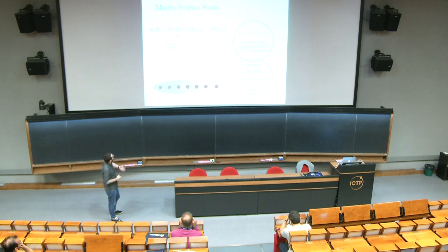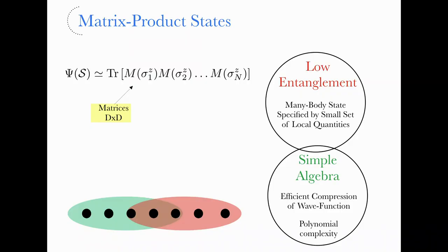Another philosophy that allows you to solve efficiently for a large class of quantum Hamiltonians is what has been discussed by Norbert Schuch in his lectures — matrix product states. The idea is that you can write an efficient ansatz for the many-body ground state which has only a relatively low number of variational parameters, and if your system has low entanglement satisfying the area law, you can demonstrate that you can describe those states efficiently.